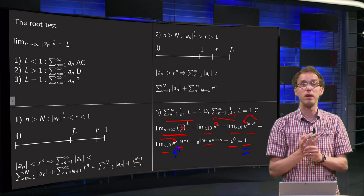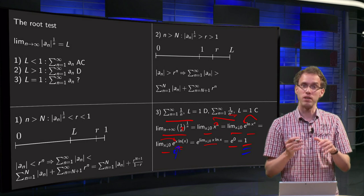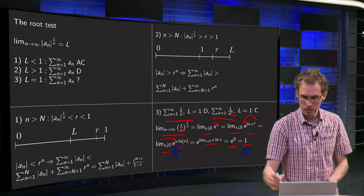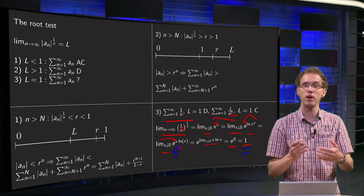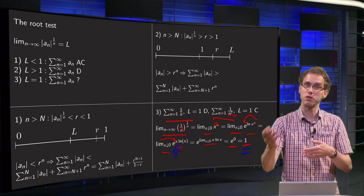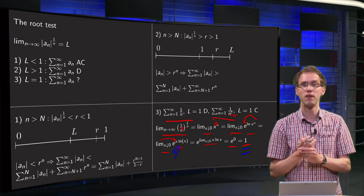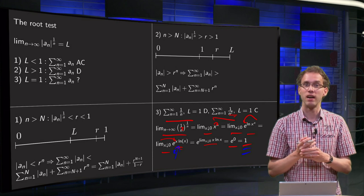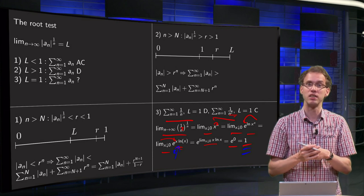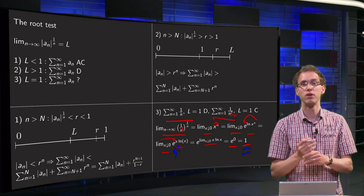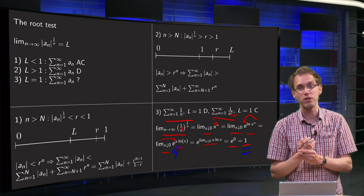So for the other limit also equals 1. So you see, if your root test gives an answer equal to 1, you don't know what's going to happen. Your series can be either convergent or divergent, so something similar happens here as with the ratio test. You only need the series itself, but it does not always give you an answer.